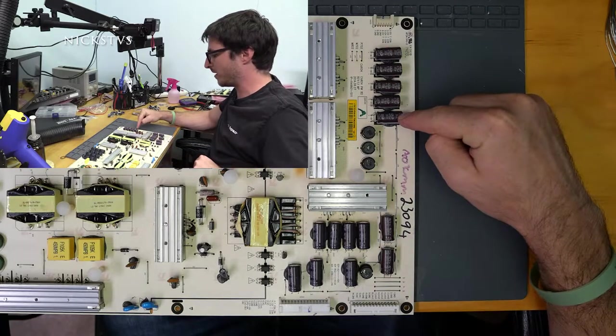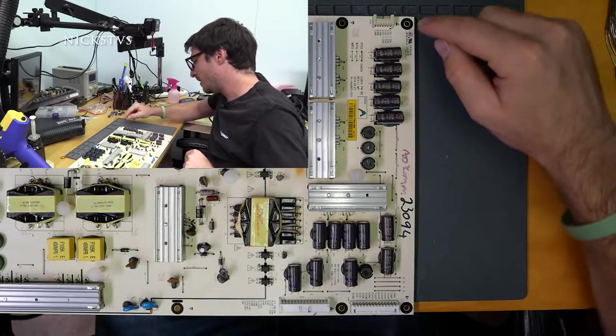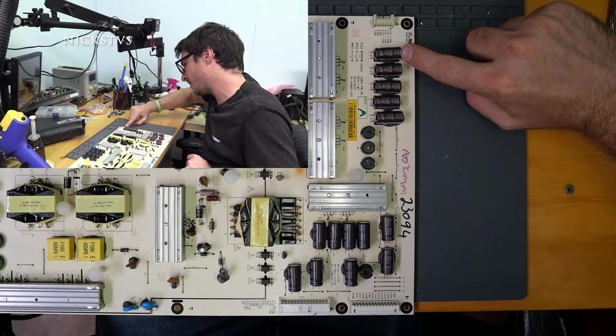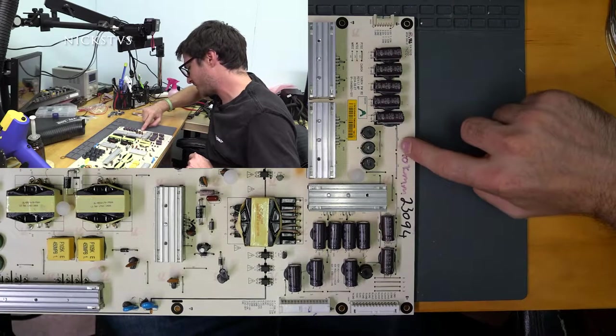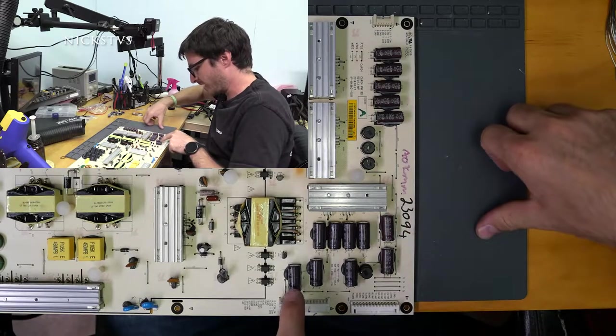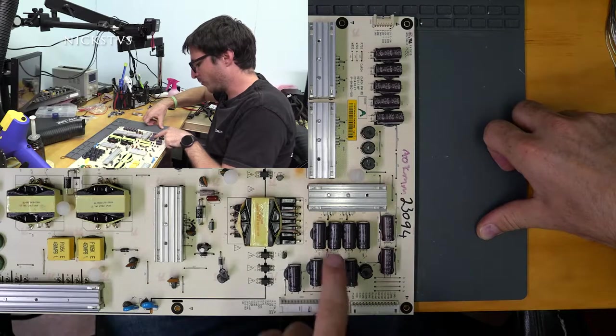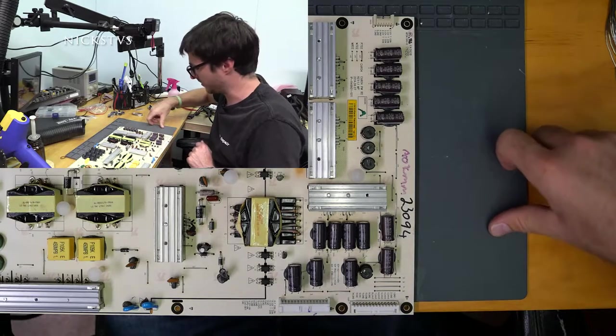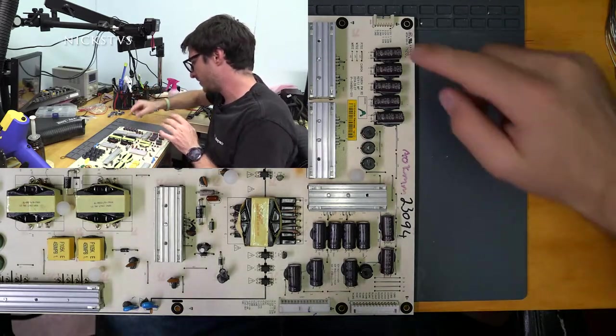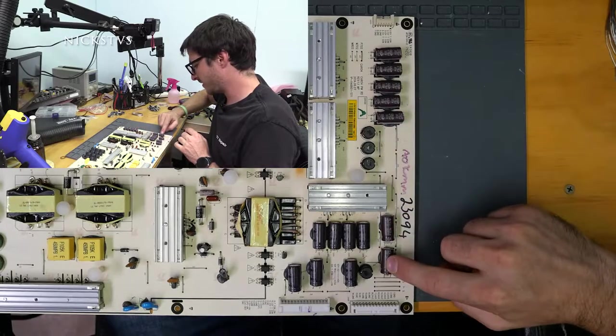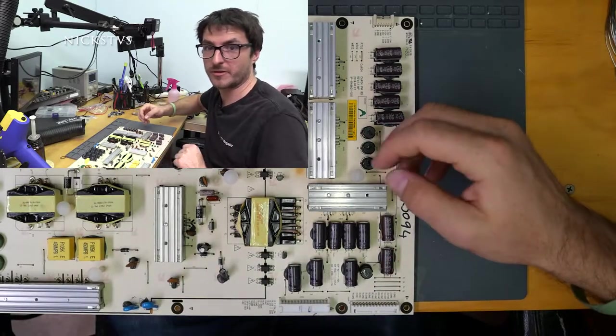and sometimes this row of five at the top as well. We have at the top 470 microfarads and 35 volts, these two as well. And then finally, the 4, 5, 6, 7 over here are 1000 microfarads, 16 volts. So we're actually going to replace 14 capacitors in total on this board to repair it.